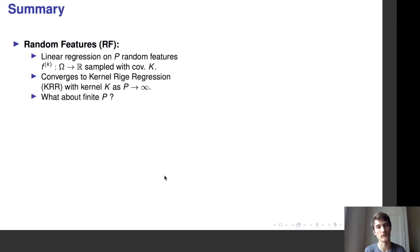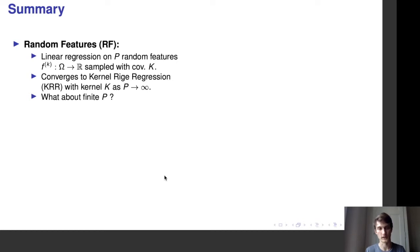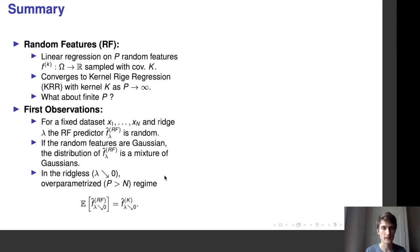The idea behind random features is to do linear regression on a choice of p random features sampled with a certain covariance kernel k. As p goes to infinity, the random feature predictor converges to the kernel ridge regression predictor with the same kernel k. This suggests that random features are a good approximation of kernel ridge regression, but we want to know exactly what happens for a finite number of features p. What we want to study is the distribution of the random feature predictor for a fixed training dataset of size n and a fixed ridge λ.